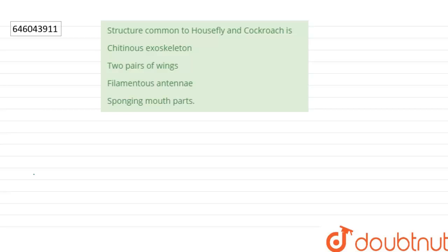The question asks: What structure is common to housefly and cockroach? The options are chitinous exoskeleton, two pairs of wings, filamentous antennae, or sponging mouth parts.